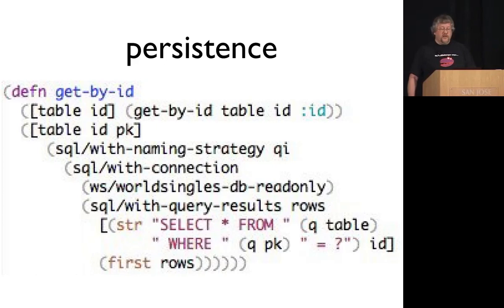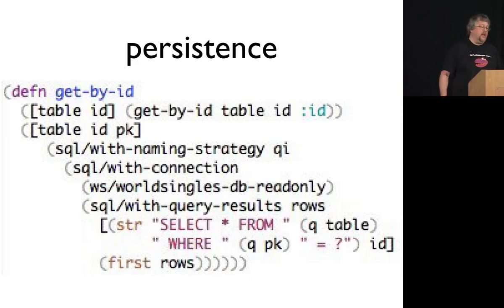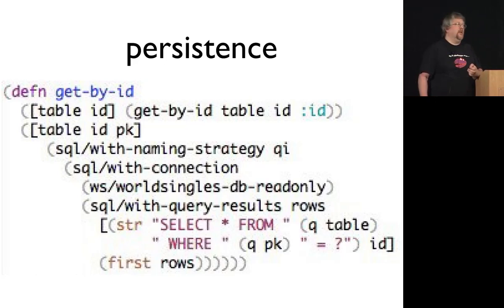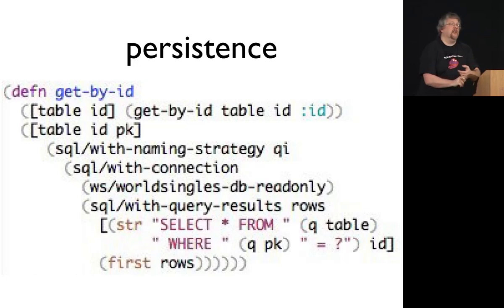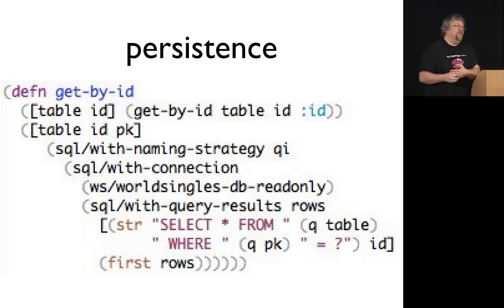If you've used the JDBC library, you end up with with-connection and with-naming-strategy, which is a little ugly compared to get-by-ID. The core team has given a laundry list of things that need to change before java.jdbc can go to a 1.0 release — specifically, where macros are used for things like with-connection and with-naming-strategy, they want a pure functional version without dynamic binding. So java.jdbc is going to get a new API that's much more composable and functional.